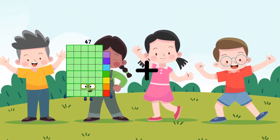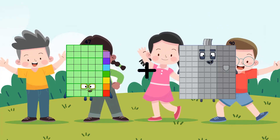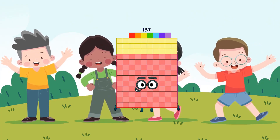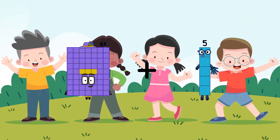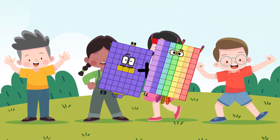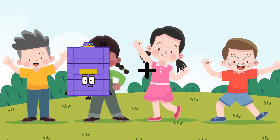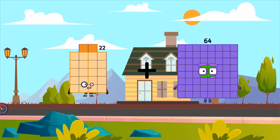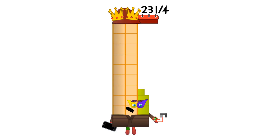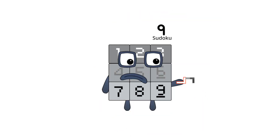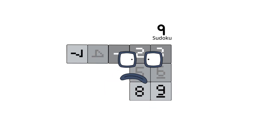47 plus 90 equals 137. 63 plus 71 equals 134. 22 plus 39 equals 61. Let me try it — I don't want to be in this shape.